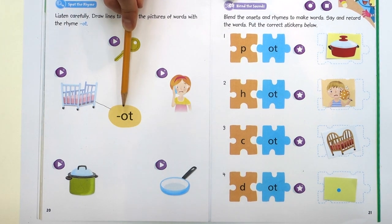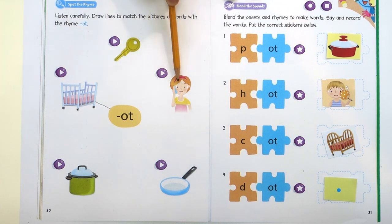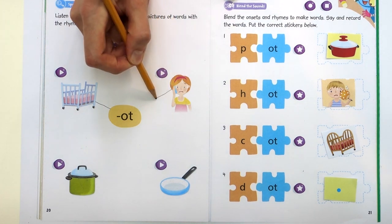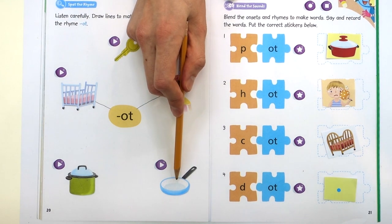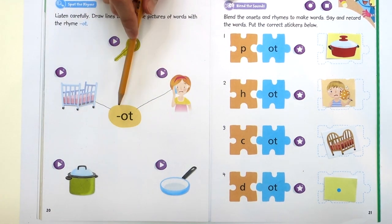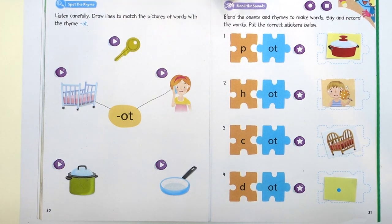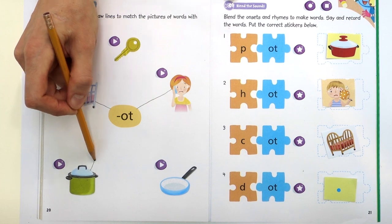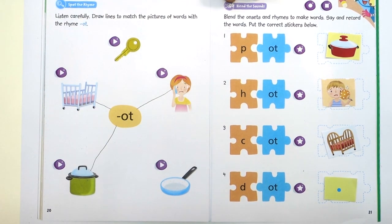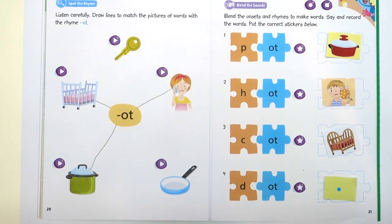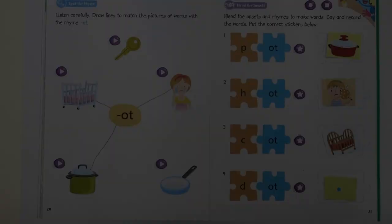Key does not have an "-ot" sound. Hot has an "-ot" sound, so we can draw a line. Pan does not have an "-ot" sound. But pot has an "-ot" sound, so we can draw a line. Well, that's all we've got time for. Thank you everyone. Bye bye.